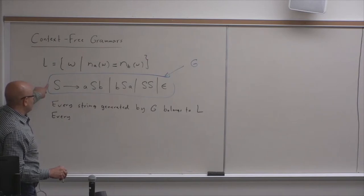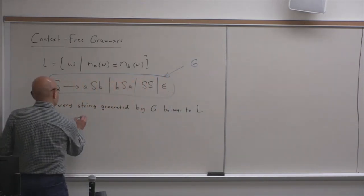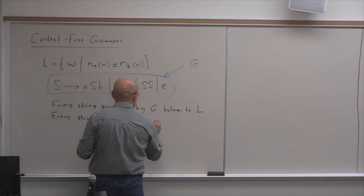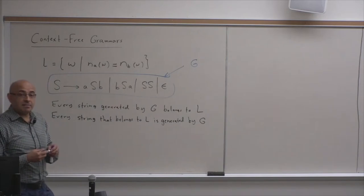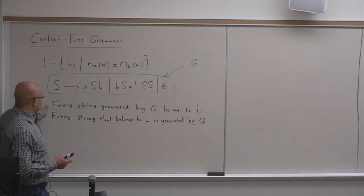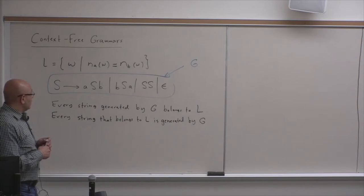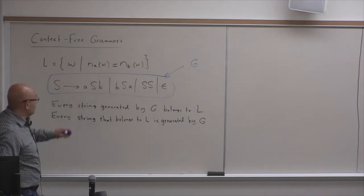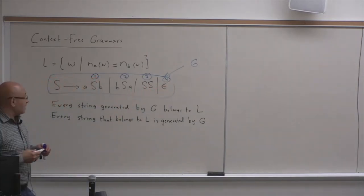To show that this grammar generates the language, we need to show that every string generated by G belongs to L, and that every string belonging to L is generated by G. These are two totally different statements. Showing that every string generated by G belongs to L is very easy — there is no way to generate a string that doesn't have an equal number of A's and B's, because none of the rules can put more A's than B's.